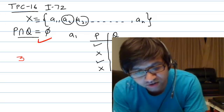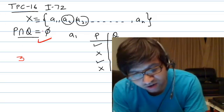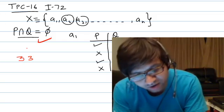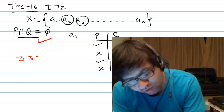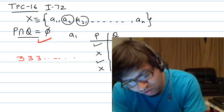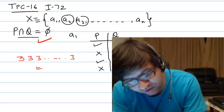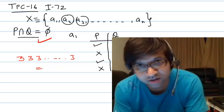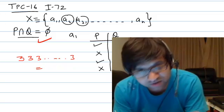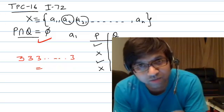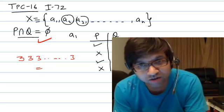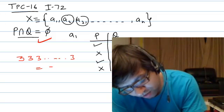For a1 there are three favorable options so that P intersection Q is empty and the given constraint is satisfied. Similarly, for a2 we have three options, for a3 we also have three options, and this goes on to the last element an. So the number of ways to form subsets P and Q such that their intersection is empty is 3 to the power n.